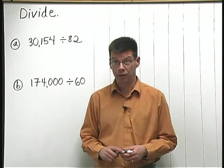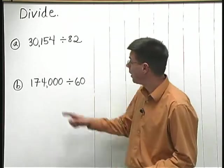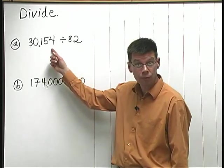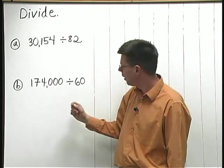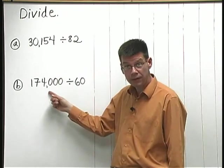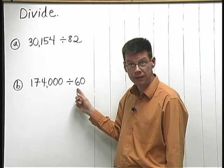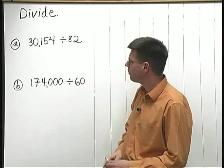Let's work a couple of challenging long division problems. A, 30,154 divided by 82, and B, 174,000 divided by 60. We'll do A first.